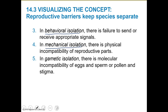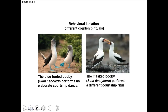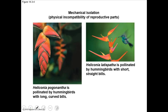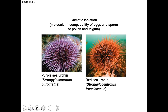We also have mechanical isolation — physical incompatibility of reproductive parts, basically the parts don't fit. And gametic isolation: a molecular incompatibility of the egg and sperm, or the pollen and stigma — they just don't molecularly match. Good examples of behavioral isolation are blue-footed boobies, which do different courtship rituals and dances. For mechanical isolation, the heliconia plant can only be pollinated by hummingbirds with the right bill shape — everything has to match up properly. For gametic isolation, sea urchins release egg and sperm into the water, but even if they meet, they may be chemically incompatible.